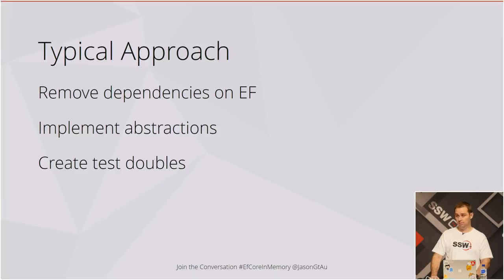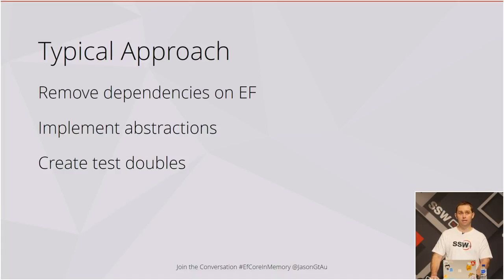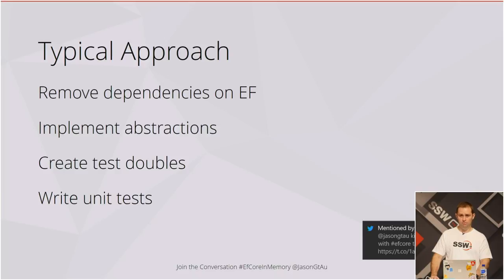Then we need to create test doubles. We've created all of these repositories and a unit of work, and if we want to test those things we need test doubles. Test doubles are basically pretend units of work and repositories — they behave in a similar way to the object but they're not the object itself. So when you do write a new unit test, your tests won't be impacted by those dependencies.